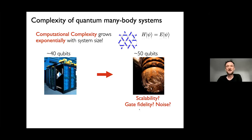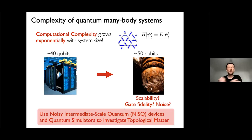Even current quantum computers have on the order of 50 qubits and promise a quickly increasing number of qubits accessible. So even the computers we have now, at least in sheer qubit count, are beyond what we can achieve using classical computers for simulating such systems. However, there are important open questions such as scalability, gate fidelity, and noise, which put strong limitations on actually using these 50 qubits. What I want to discuss is the use of noisy intermediate-scale quantum devices — the quantum computers and quantum simulators available today — to investigate different aspects of topological matter.